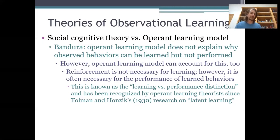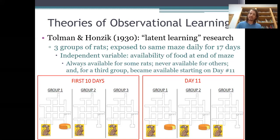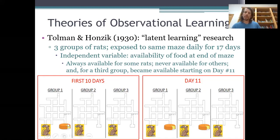This is a classic study. The experiment involved a fairly complex maze and three groups of rats. The rats in each group were exposed to the same maze the same number of times, but the groups differed in one key variable: whether or not food was available at the end of the maze. For the rats in the first group, food was always available — they always got reinforced with food whenever they made it to the end.